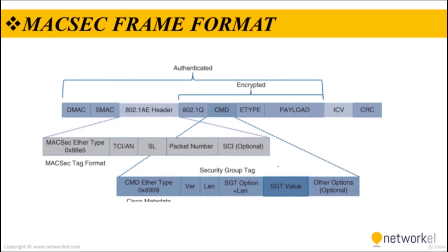When it comes to the MACsec frame format, MACsec is based on the Ethernet frame format. However, an additional 16-byte MACsec security tag field and a 16-byte Integrity Check Value (ICV) field are added. This means all devices in the flow of MACsec communications must support MACsec. MACsec provides authentication using Galois Message Authentication Code, or authenticated encryption using Galois/Counter Mode Advanced Encryption Standard (AES-GCM).